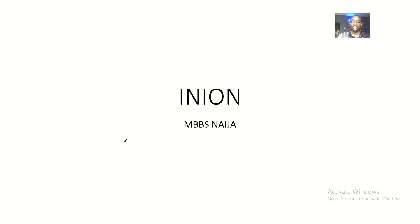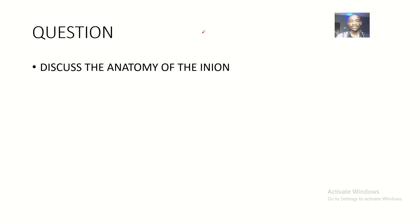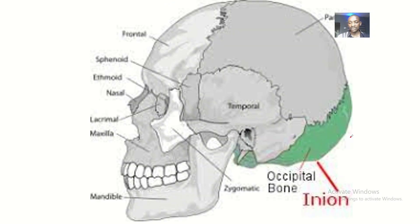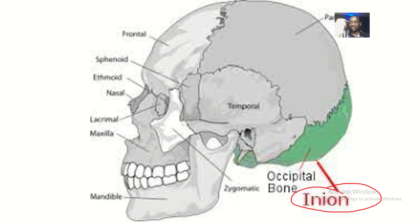Today we'll be talking about the inion. The question is: discuss the anatomy of the inion. Looking at this image, the inion is located on the occipital bone, and this whole area of the occipital bone is called the posterior occipital protuberance.